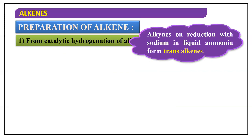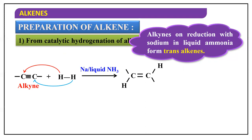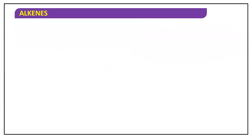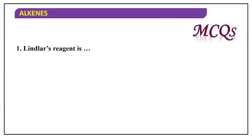Alkynes can also be reduced with sodium in liquid ammonia. This reaction gives us trans alkenes, unlike Lindlar's catalyst which gave cis alkenes. If you want to create trans alkenes, you use sodium in the presence of liquid ammonia. In this case, hydrogen adds to opposite sides of the multiple bond to give a trans alkene.